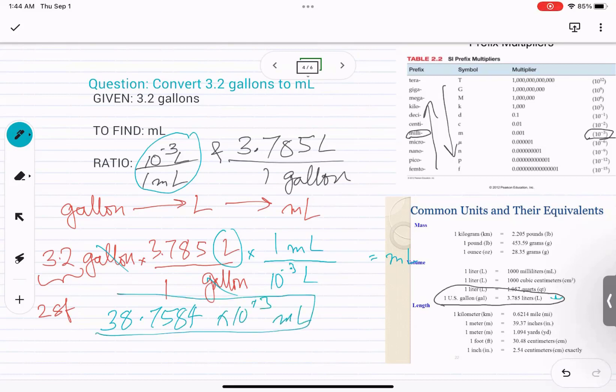Now remember, write this in scientific notation and we need two sig figs. So when you write it in scientific notation, it should end up being 1.2 times 10 raised to positive 4 milliliters.